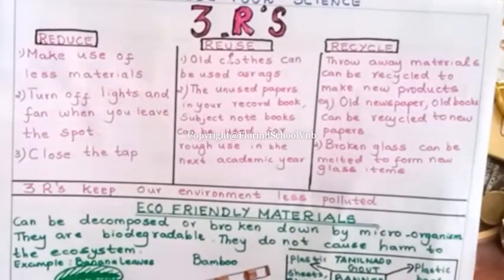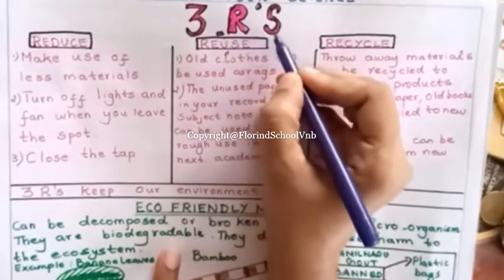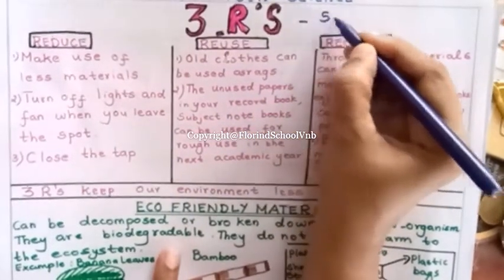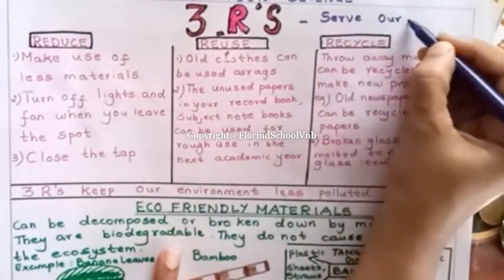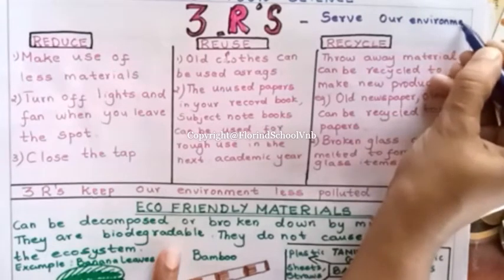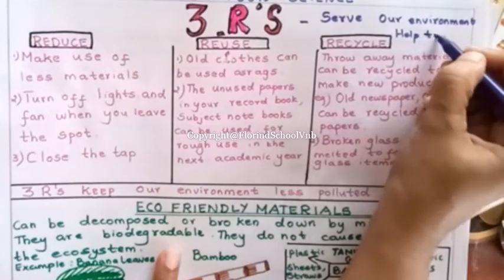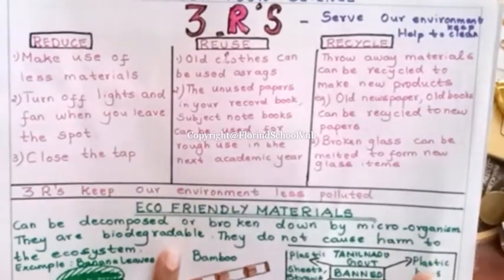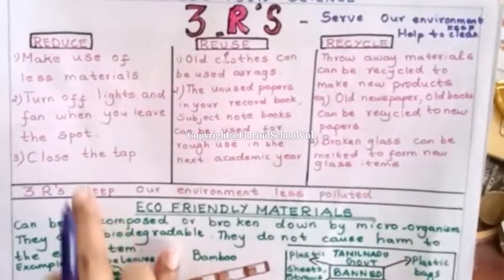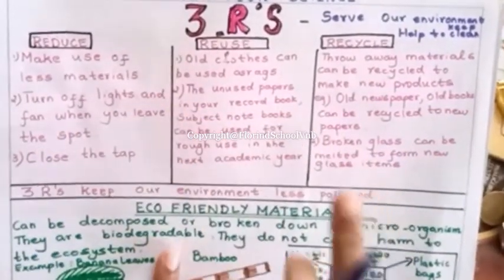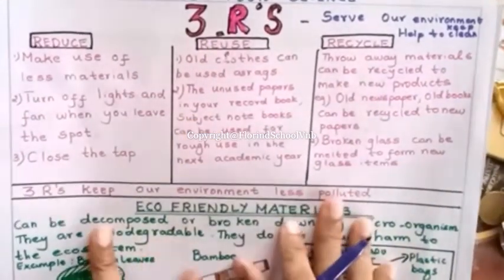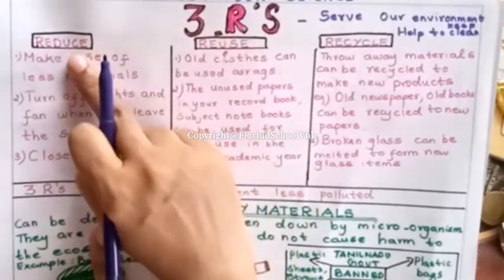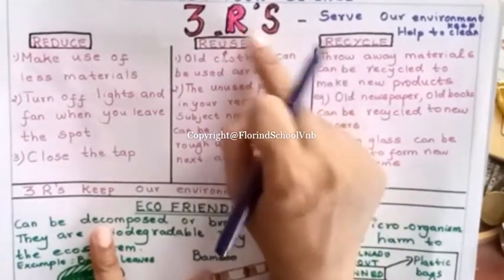Now let us learn about the three R's. There are three R's which help our environment, which serve our environment. They help to keep our environment clean. What are the three R's? They are the best friend of the environment, best friend of the earth, best friend of nature. They are: Reduce, Reuse, and Recycle.